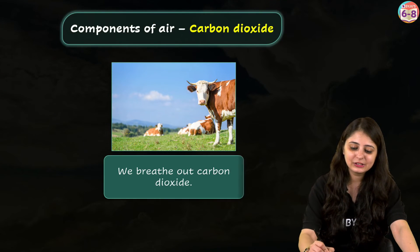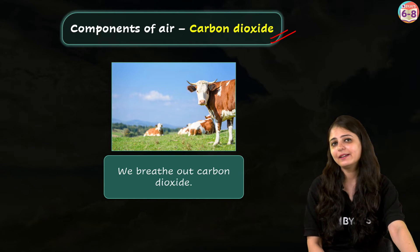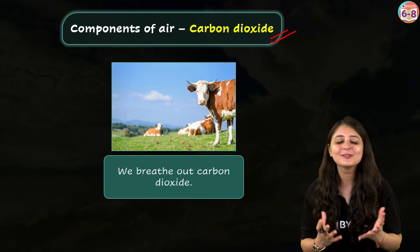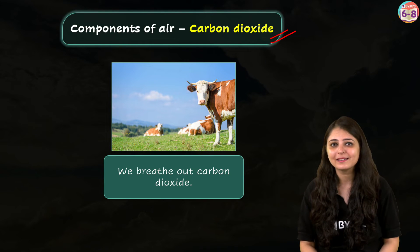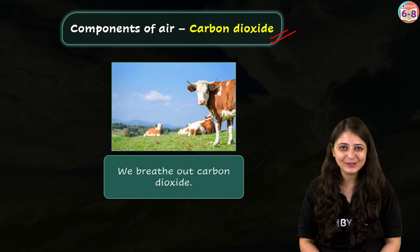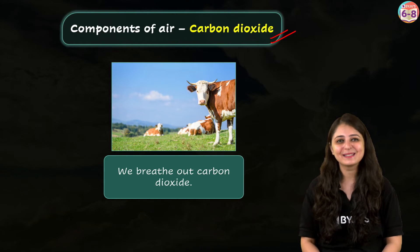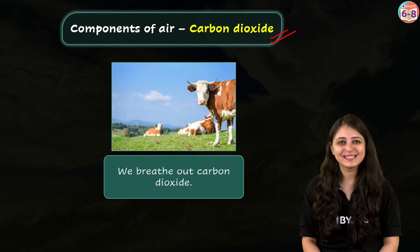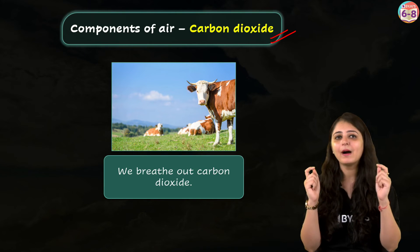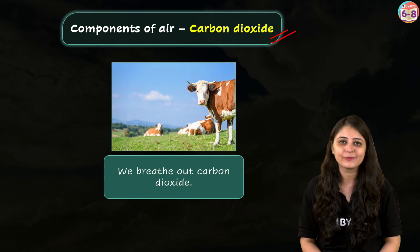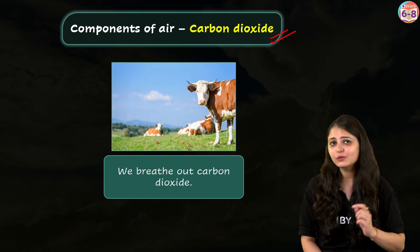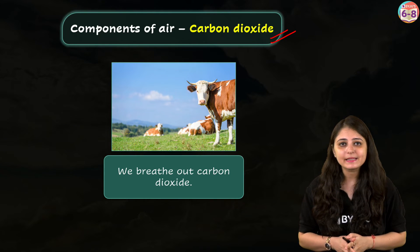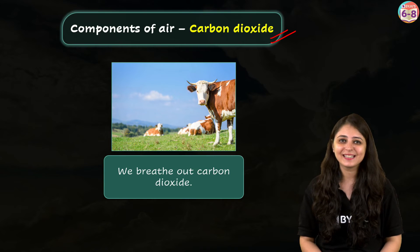Moving on, the next important component is carbon dioxide. We breathe out carbon dioxide — so why is it important? Plants take in carbon dioxide from the air through tiny holes in their leaves and use it to make their own food in a process called photosynthesis. Carbon dioxide also makes Earth a comfortable place to live — it's like a warm blanket around our planet. When sunlight comes to Earth, some bounces back into space, and some is trapped by carbon dioxide and other gases, keeping our planet warm.